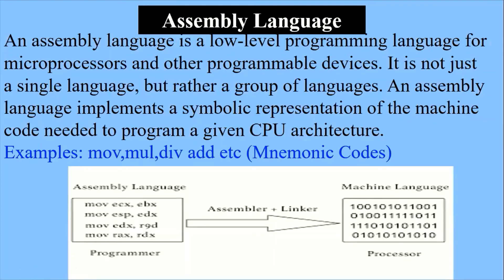So assemblers are used in assembly language to convert into machine code. Each and every language uses a different type of translator that converts the source code into machine code. I hope students you understand today's lecture. In the next video, we will cover language translators related to programming languages. Allah Hafiz.